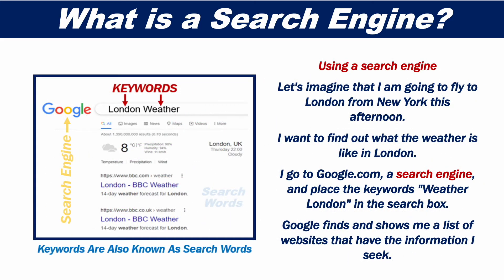Let's imagine that I'm going to fly to London from New York. I want to find out what the weather is like in London. I go to Google, a search engine, and place the word weather London in the search box. Google finds and then shows me a list of websites that have the information I seek.